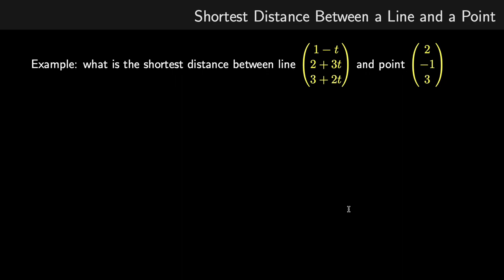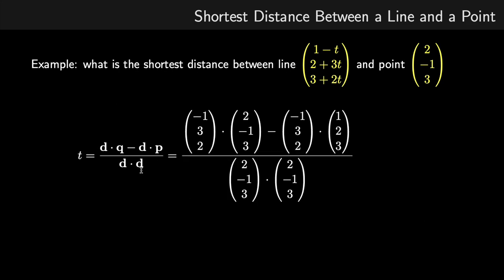Let's look at a worked example. We have a vector equation of a line — a vector in terms of parameter T — and another point Q. Using the expression derived previously, D is the coefficient of T, so the direction vector is minus one, three, and two, dot producted with Q.